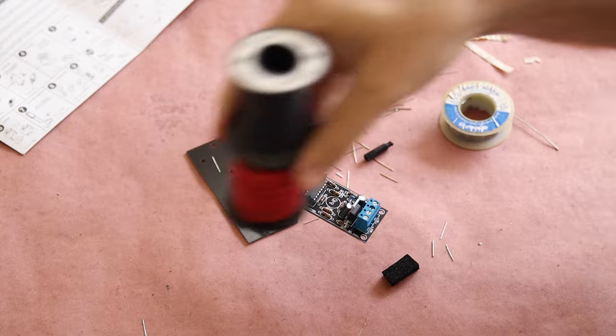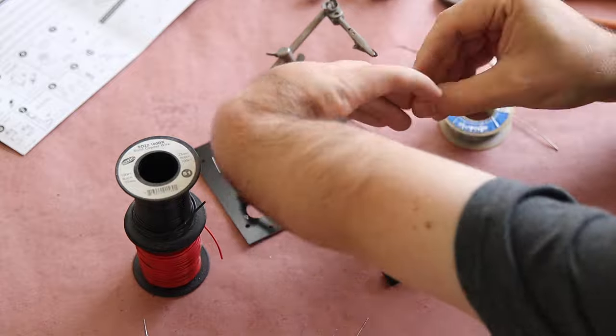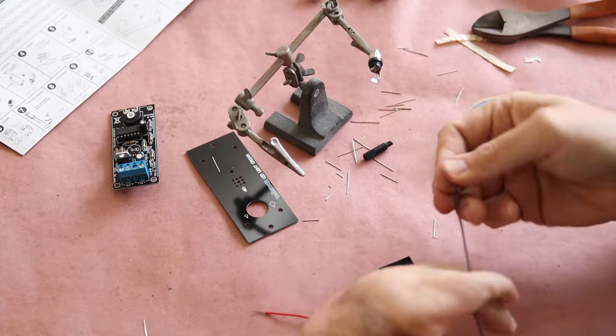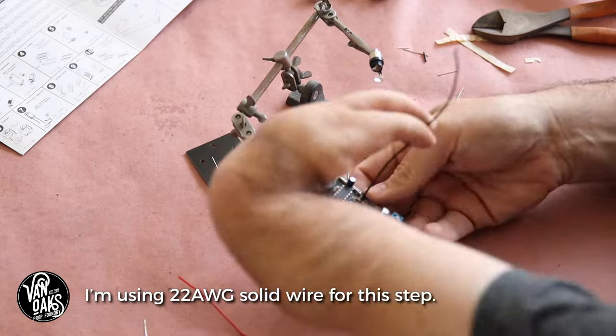The biggest question I had for this project was whether or not I could substitute an RCA connection where the small microphone is supposed to go. So once I finished soldering all the resistors in place, it was time to make a short RCA cable and wire it to the board.